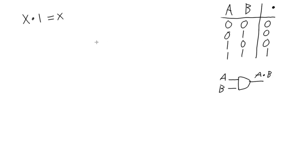Now, theorem 2 prime, which is X and 0 equals 0. Now, hopefully this one should be very intuitive, right? We need two 1s for the AND gate to be a 1, for the output to be a 1.